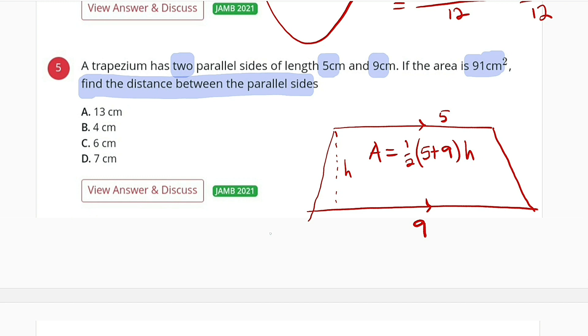So A is given, which is 91, and this is equal to half of 5 plus 9. 5 plus 9 is 14, half of 14 is 7, so we have 7 times h. To find h we just divide both sides by 7, and h equals 91 divided by 7. 91 divided by 7 is equal to 13. Therefore h is equal to 13 cm, which is option A.